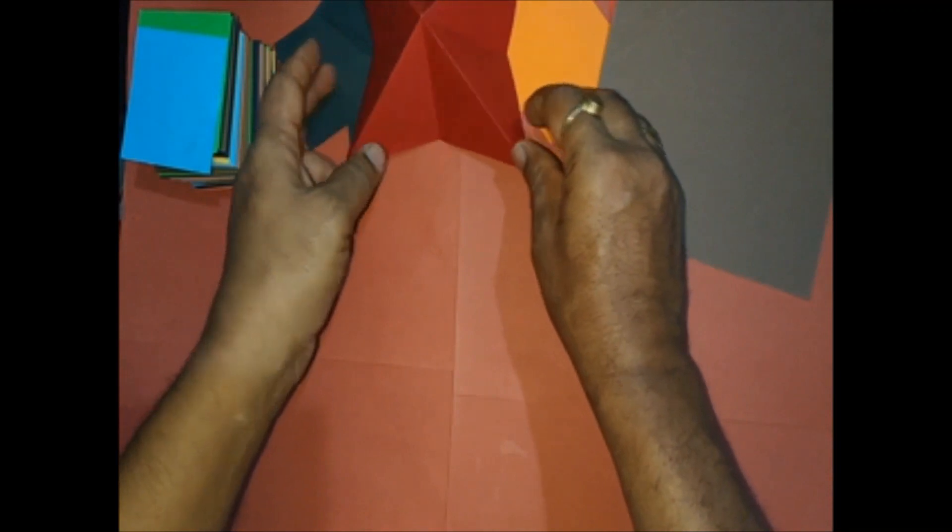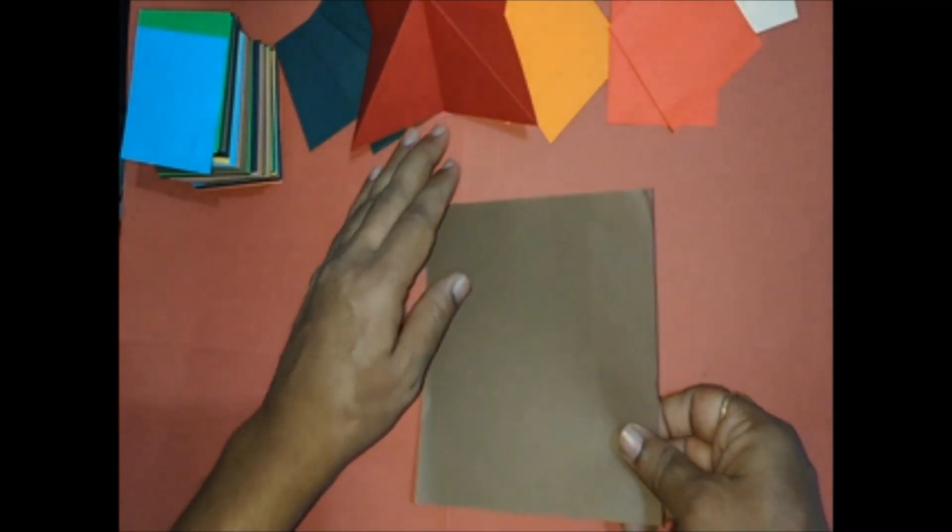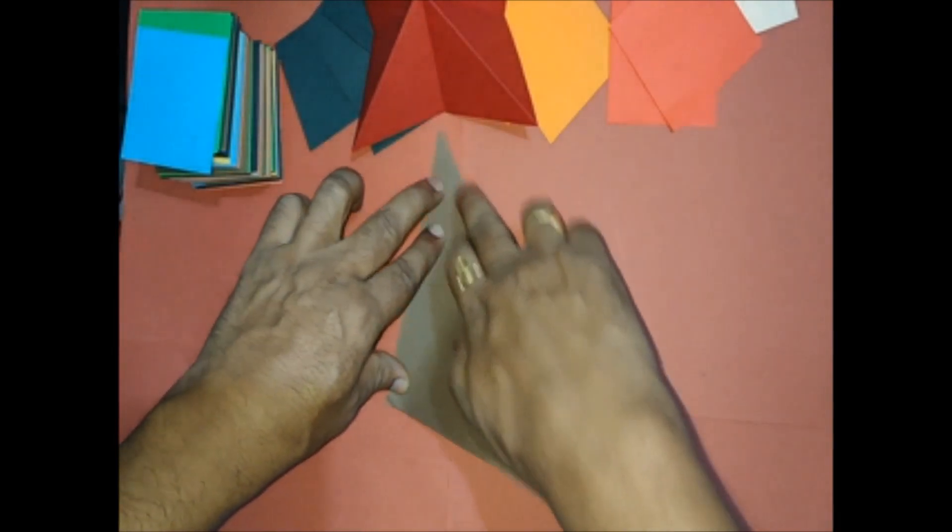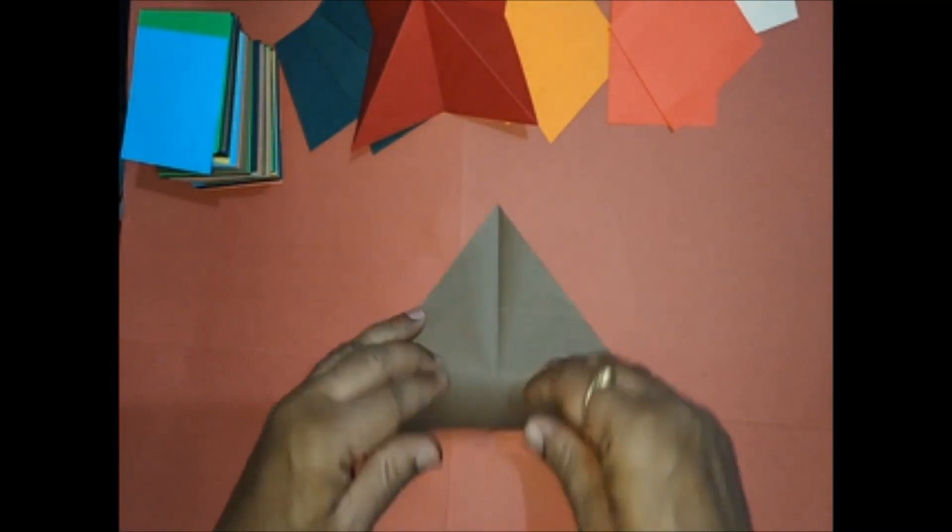Take one more square paper. First make the diagonal folds. One more fold.